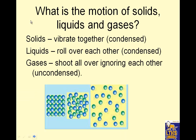What is the motion of solids, liquids, and gases? Solids are condensed — they vibrate together, but they're next to each other all the time. Liquids roll over each other; they're condensed — condensed means packed in tightly — so they roll over each other but they stay together. Gases shoot all over, ignoring each other — uncondensed. They pay no attention to each other.